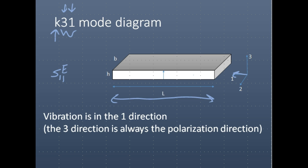Because it's the K31 mode, we're applying the electric field in the 3-direction, so we'll be measuring D31. However, at a low frequency such as one kilohertz — hopefully far from the resonance frequency — we'll be measuring the permittivity in the 3-3 direction. We're applying electric field in the 3-direction, and we're getting charge and polarization developed in the 3-direction. Therefore, the permittivity measured will be that of the electric field applied in the 3-direction and the resultant polarization in the 3-direction.